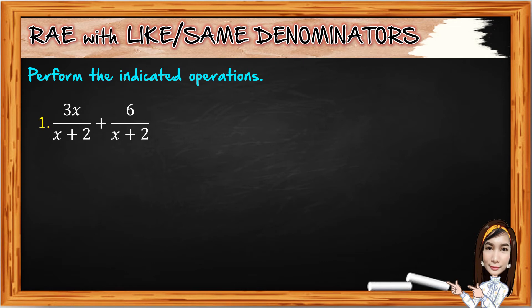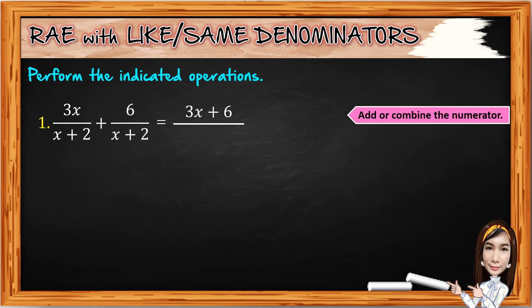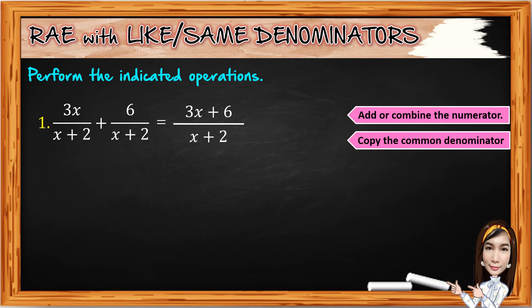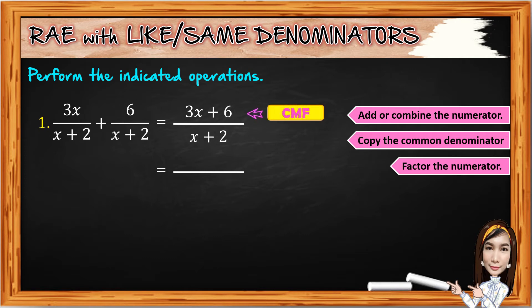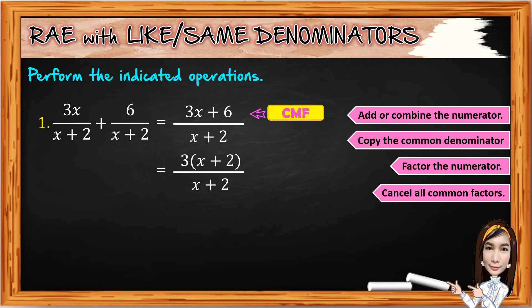Let's have the following examples. For number one, we have 3X over (X plus 2) plus 6 over (X plus 2). We have the same denominators. First, add the numerators to get 3X plus 6, then copy the common denominator X plus 2. Factor the numerator — 3X plus 6 has a common monomial factor of 3. Factor out 3 to get 3 times (X plus 2), then copy X plus 2 in the denominator. Cancel the common binomial factor: (X plus 2) divided by (X plus 2) equals 1. Multiply the remaining: 3 times 1 equals 3. The final answer is 3.